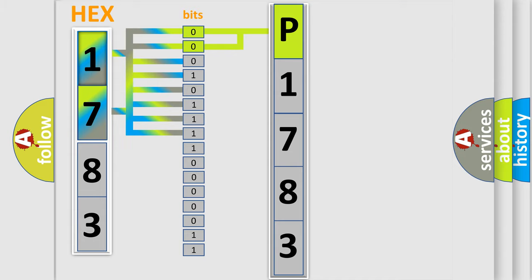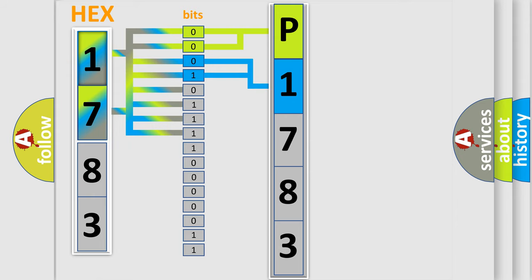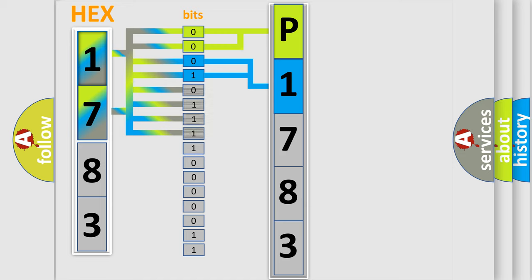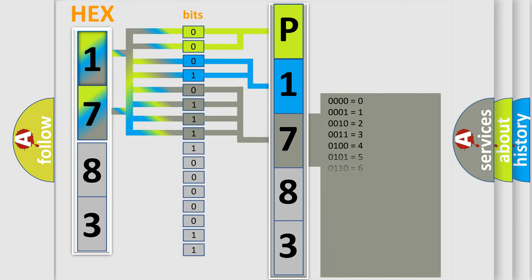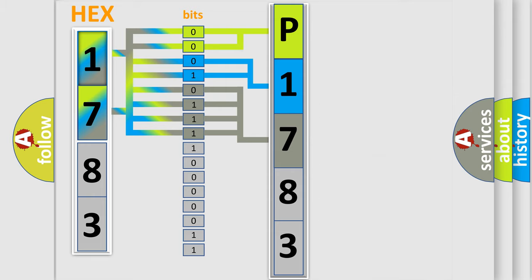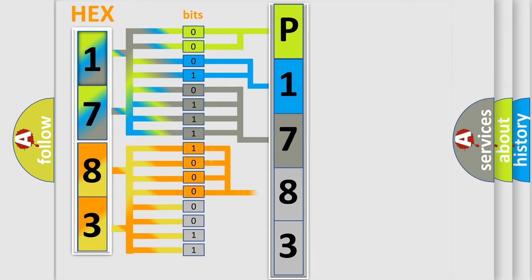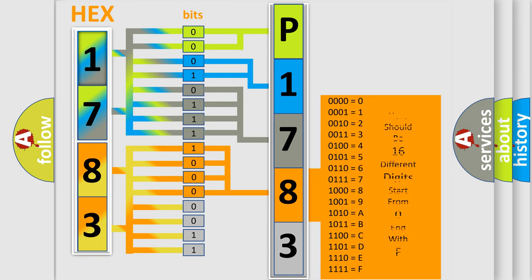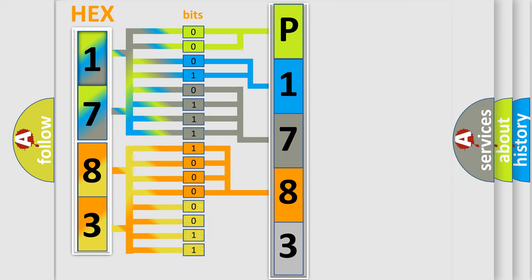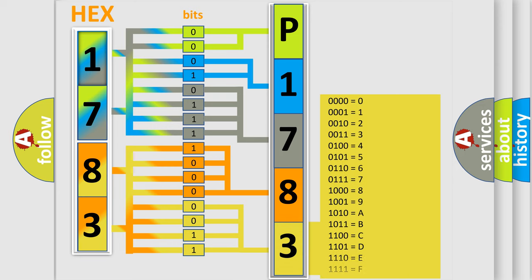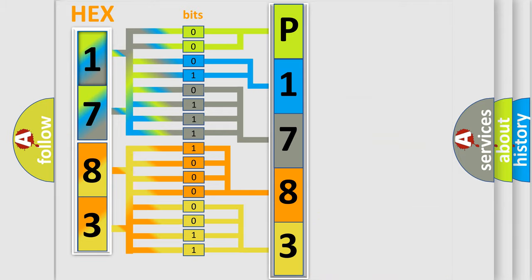The next two bits determine the second character. The last bits of the first byte define the third character of the code. The second byte is composed of a combination of eight bits. The first four bits determine the fourth character of the code, and the combination of the last four bits defines the fifth character. A single byte conceals 256 possible combinations.